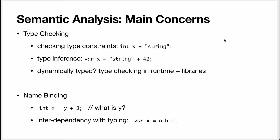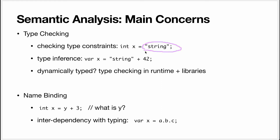What do we in practice usually check? The big one is type checking. Type checking is two things: checking type constraints and type inference. If I write 'int x = string,' I have a constraint that x has to be an integer, and the type of the right-hand side is string. I need to check that there is a match between the constraint and the actual type. In this case, it's a type error.